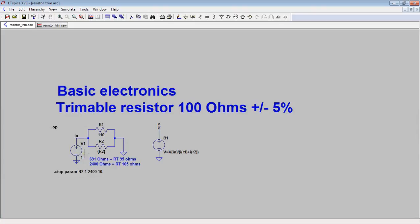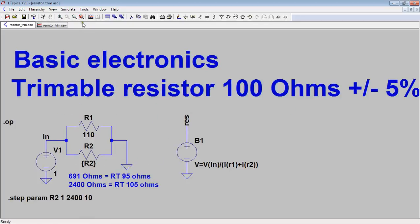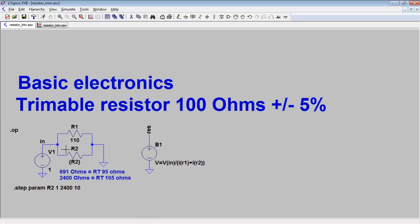And the reason for using this method is because it's more practical and better to use a trimmable resistance that is not very low ohmic value. Okay, thank you very much for your attention.